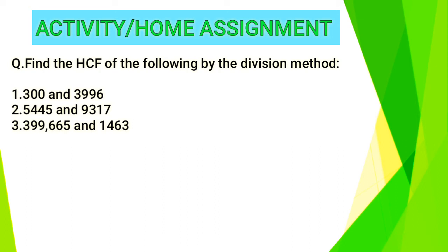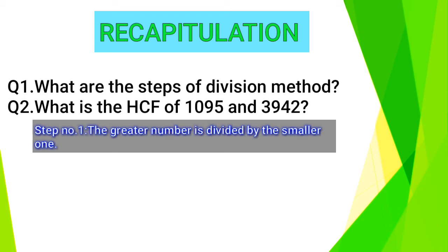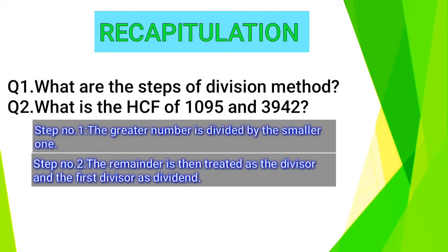And we are moving towards recapitulation. Question number 1, what are the steps of division method? Step number 1, the greater number is divided by the smaller one. Step number 2, the remainder is then treated as the divisor and the first divisor is dividend.